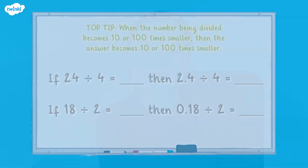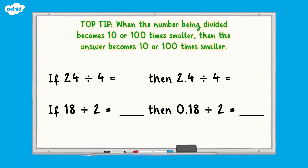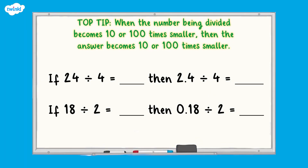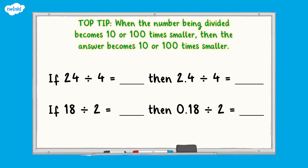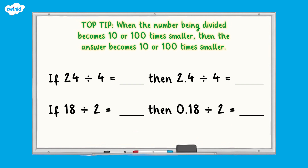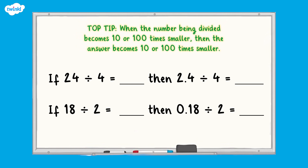Now it's time to use what you've just learned to solve the following calculations. Top tip: when the number being divided becomes 10 or 100 times smaller, the answer also becomes 10 or 100 times smaller.